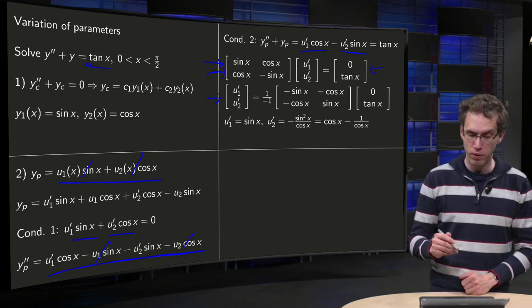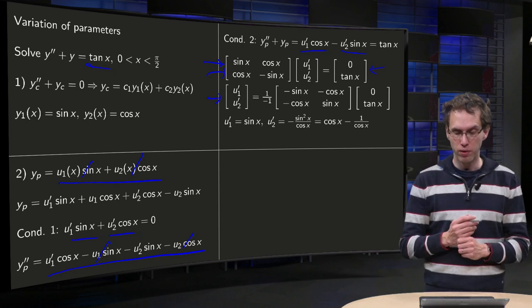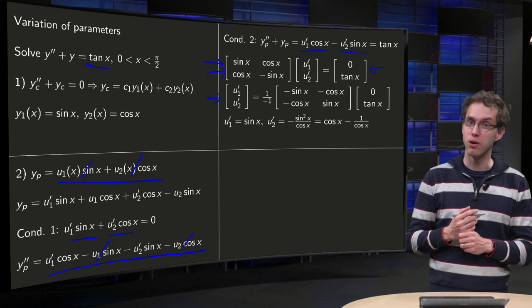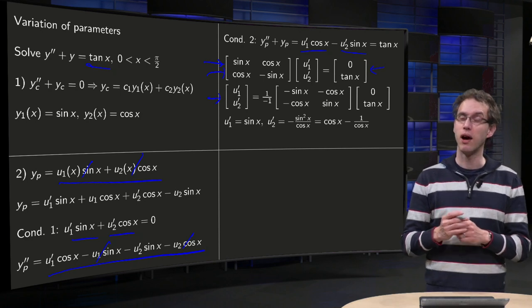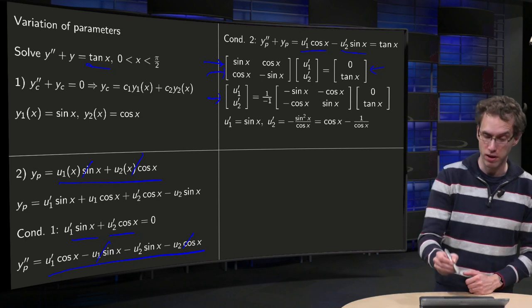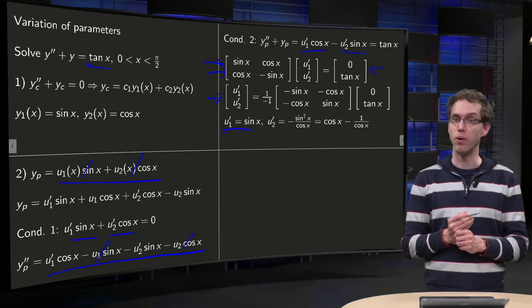So we can solve for u₁'. We see u₁' = 0·sin(x) - cos(x)·tan(x). And that's nice because tangent equals sin over cos, so cos drops out. So we have u₁' over here.